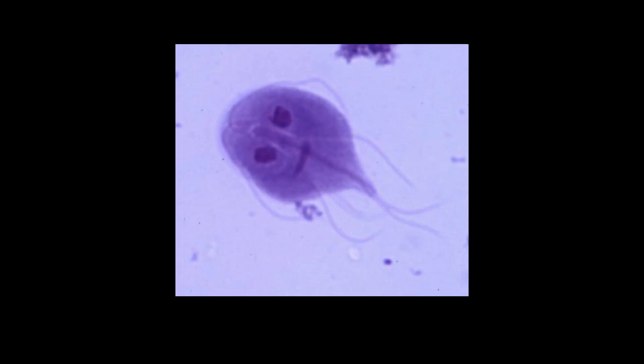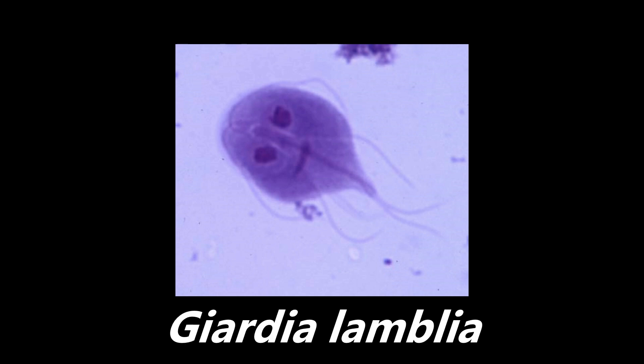This next image is super high-yield. Nothing else really looks like this. This is an example of Giardia lamblia — more specifically, this is the trophozoite form. This is the cause of Giardiasis, one of those nasty infectious diarrheas. Nothing else looks like this — you've probably seen it on Sketchy or similar resources. Commit this to memory: if you see this image, it's Giardia lamblia.